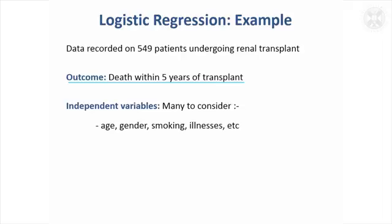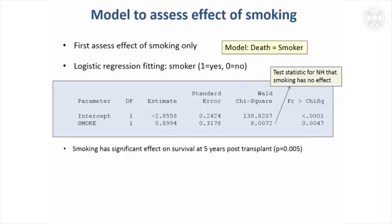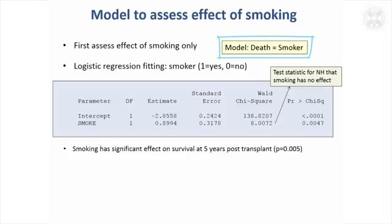To make it a simple outcome, we only consider patients who were followed up for five years — they were either alive or dead after five years. So one of the things recorded was smoking, and you might think: does that affect how likely they are to survive within five years of having a transplant? We'll just look at the effect of smoking using logistic regression first. Smoking takes a value of one or nought, and the outcome — death — also takes a value of nought or one.